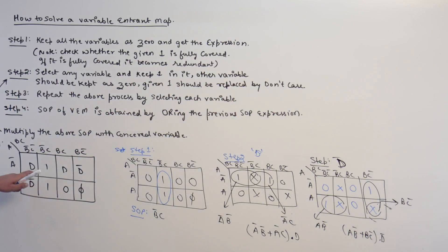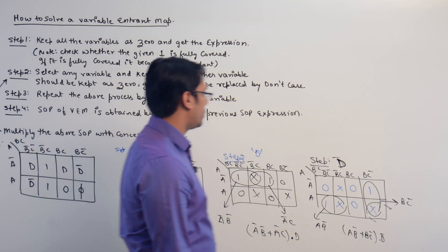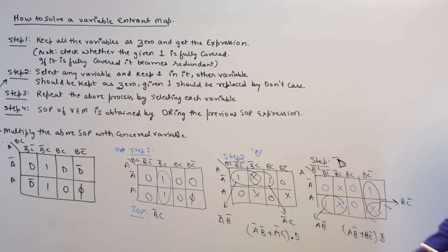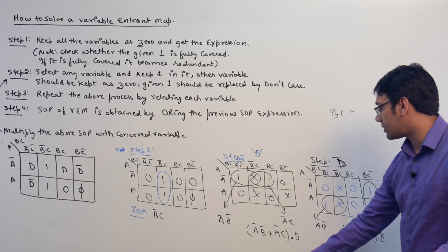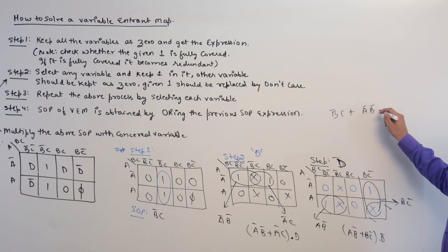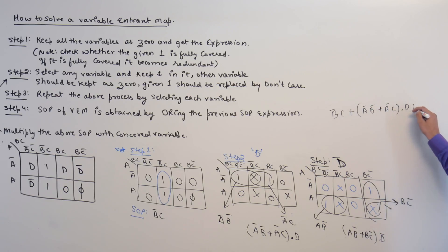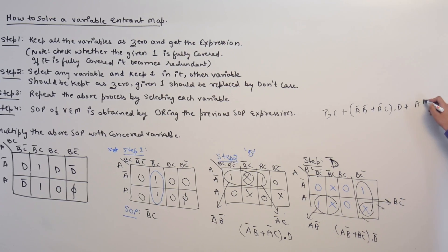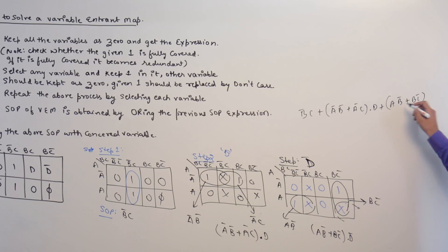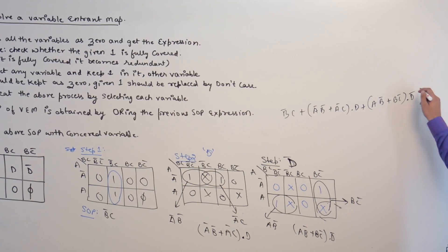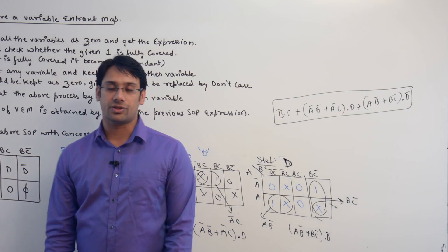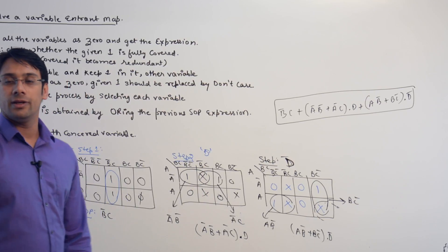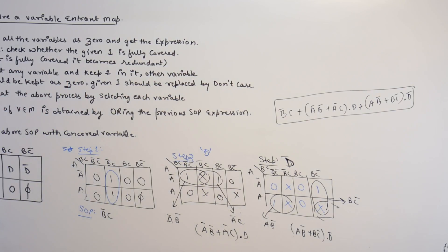We had only two variables, d and d complement. Step four: the SOP for the variable entrant K-map is obtained by OR-ing the above SOP expressions. So OR-ing these three: the first SOP expression is b complement c, plus the next is a complement b complement + a complement c, dot d, plus the third is ab complement + bc complement, dot d complement. This is the solution equation for the given variable entrant K-map. Now let us take more examples for variable entrant K-maps. Thank you.